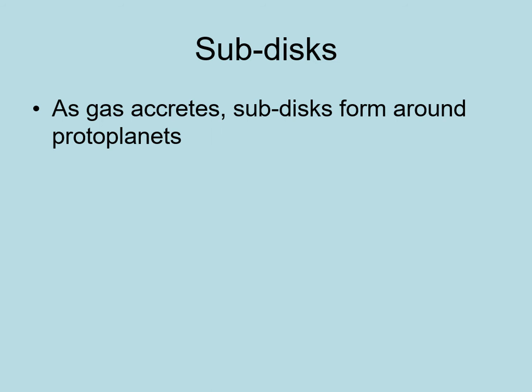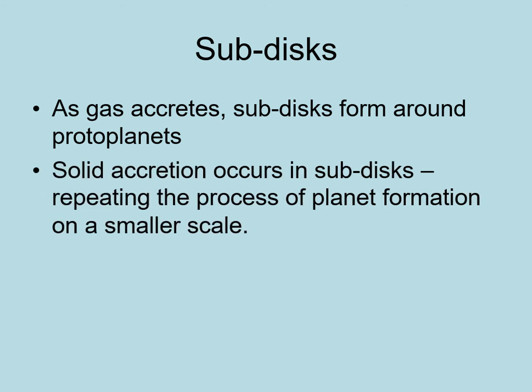Think about what this means. You've got a planet forming in the disk around the star. At the same time, a smaller sub-disk of gas and dust forms around the planet. All of the processes of condensation and solid body accretion in the formation of planets will be repeated in these sub-disks, so there's every reason to believe that solid bodies will start to form around the planet, just like planets form around the star.